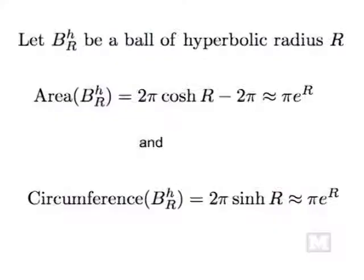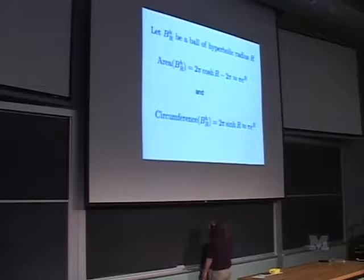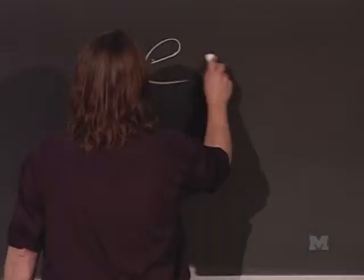You can also do some calculations to find what is the area of a ball in hyperbolic space. It turns out to be 2 pi times the hyperbolic cosine of r minus 2 pi, but roughly pi times e to the r. E is about 2.718. That grows really fast — already 2 to the 10 has four digits. E to the r grows quite a bit faster than pi r squared.